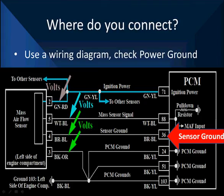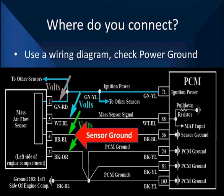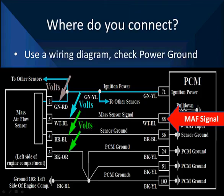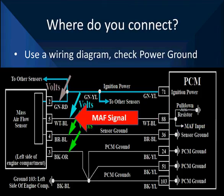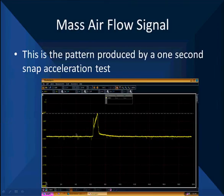We also have a sensor ground, which is there as the reference for the PCM to reference the mass air flow signal. The mass air flow signal wire is what we'll be looking at with a lab scope.